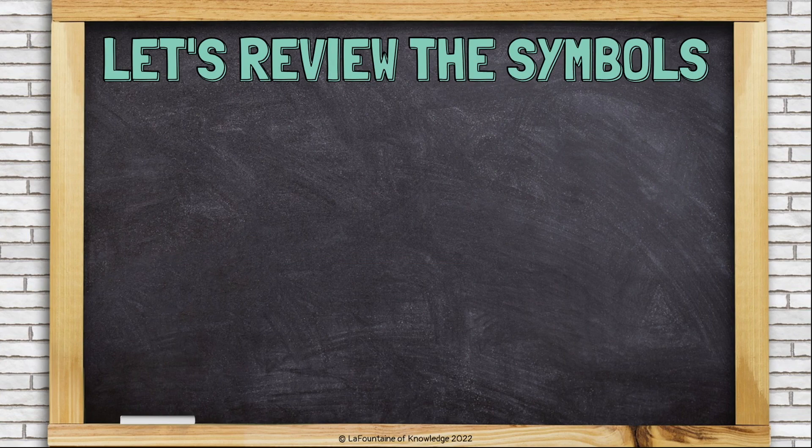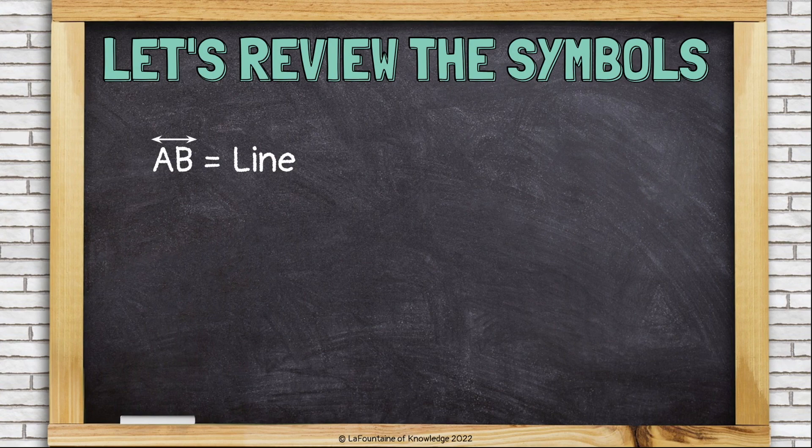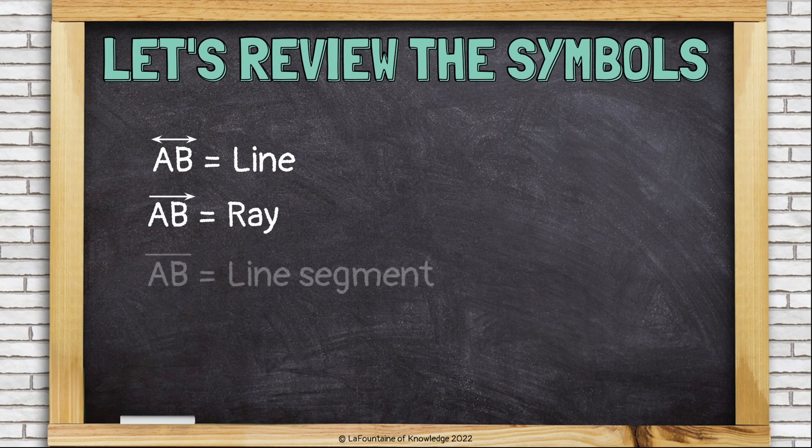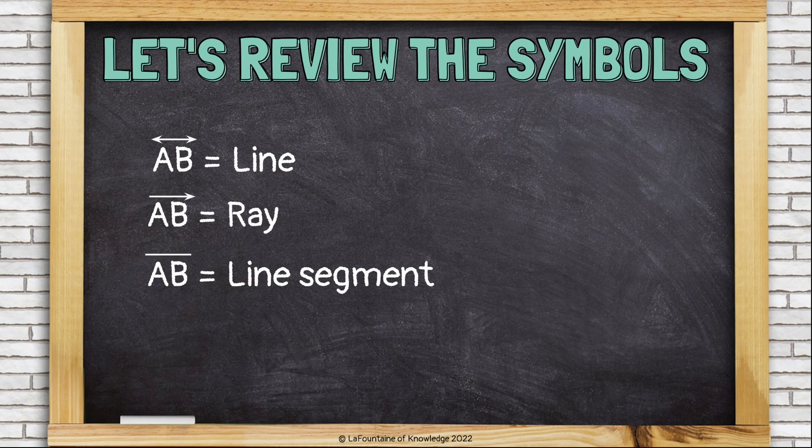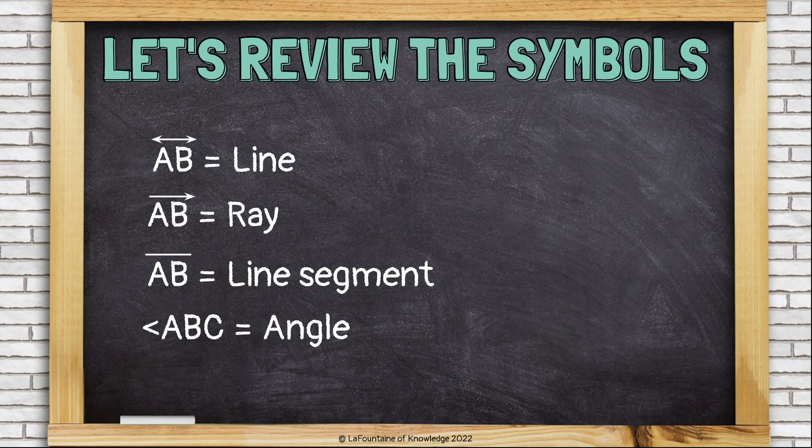Let's review the symbols that we learned in this lesson. To write a line, put two letters and on top of it put the line symbol, which is like a little line with arrows on both sides. The symbol for ray is a little line with an arrow on only one side. The symbol for a line segment is just a little line without any arrows. The symbol for angle kind of looks like a little acute angle or a less than sign.